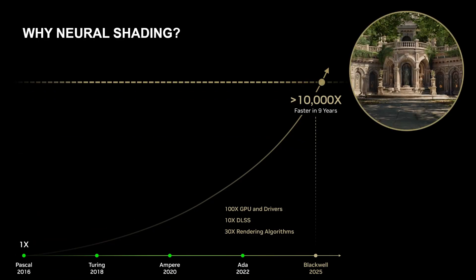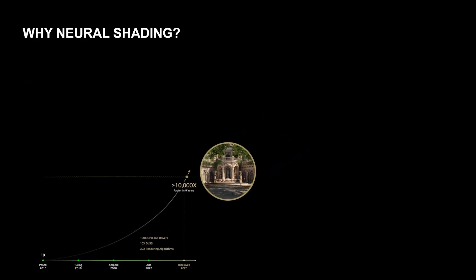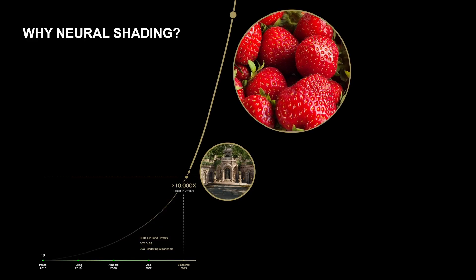So today we're at this point where we can render scenes like this, path traced in real time. But what you don't want is to have to bet on another 10,000x speedup happening before you can render the sort of level of detail you see in the world around you. The problem, in part, is what fueled this curve going up — this growth in graphics fidelity — is Moore's Law.